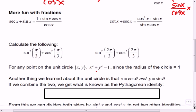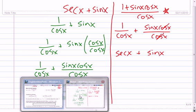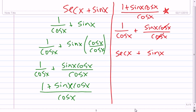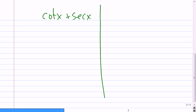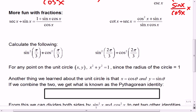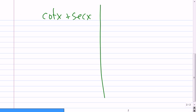So again, I'm going to do it on a bigger piece just so that you can see it more clearly. So this time we've got cotangent x plus secant x. And on the other side, cosine squared plus sine x over sine x cos x.